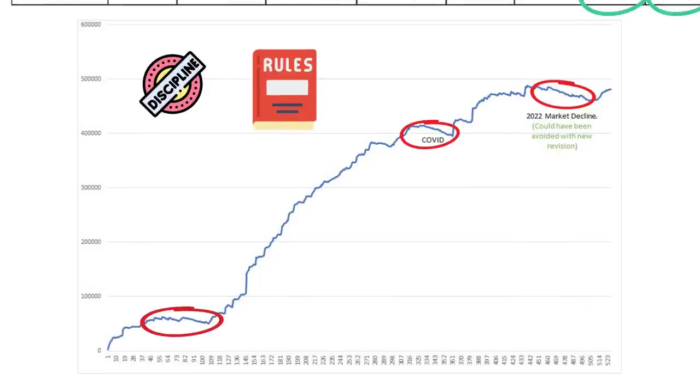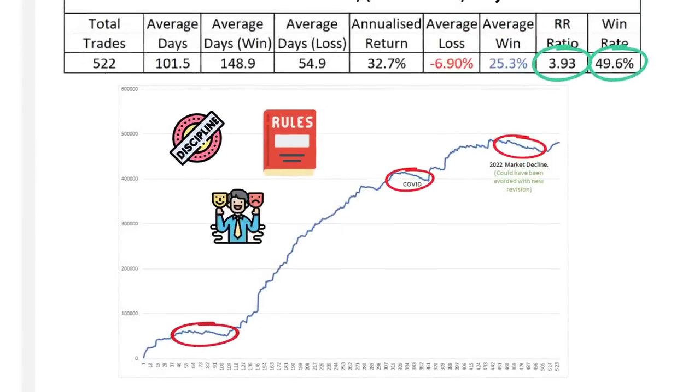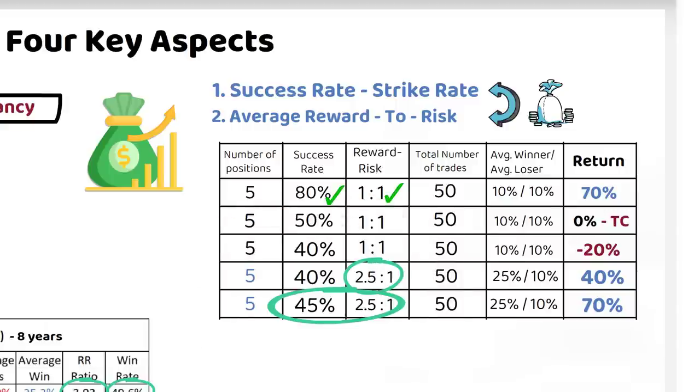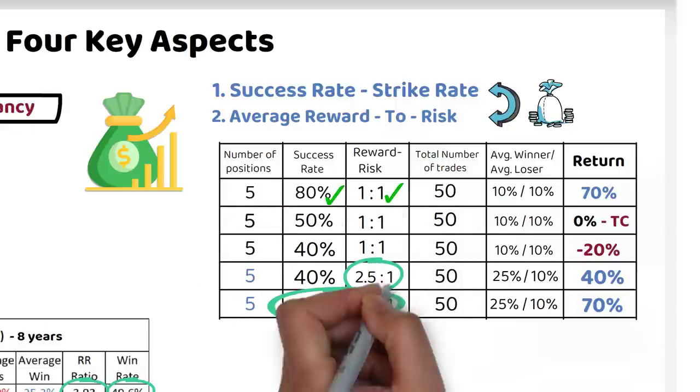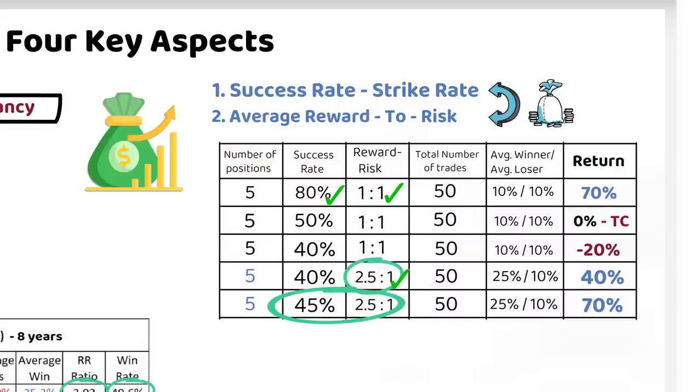The ability to stay disciplined is ultimately dependent on your personality. If you like to take quick profits, you must have a high success rate. Or if you're patient and can wait for bigger gains, you can be profitable with a lower success rate.